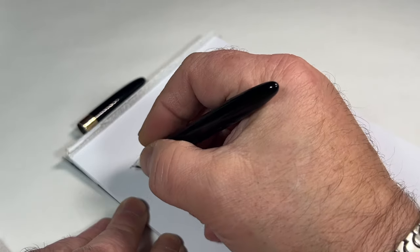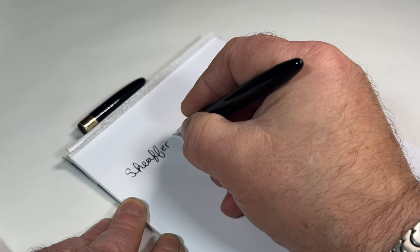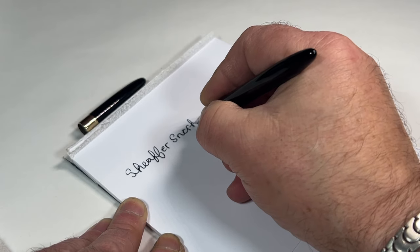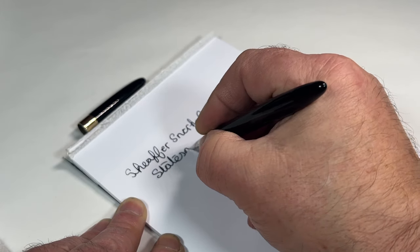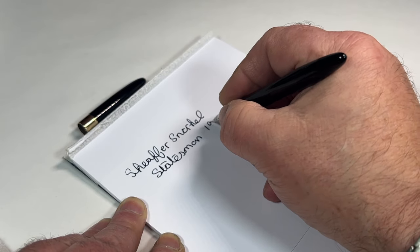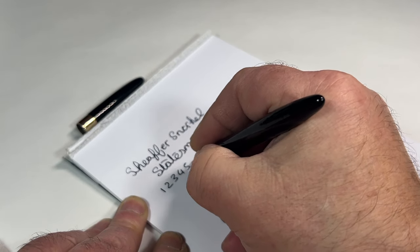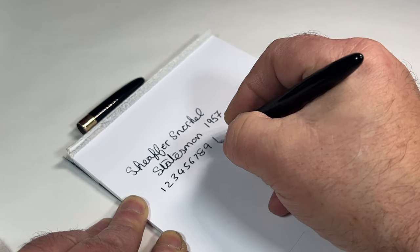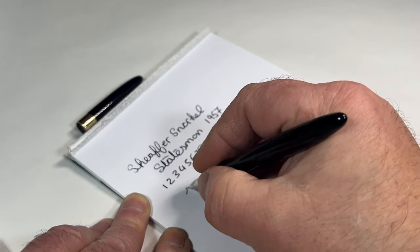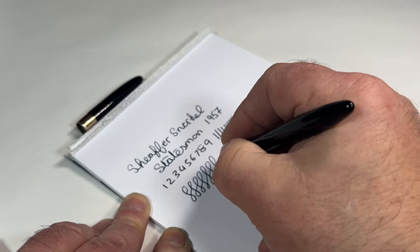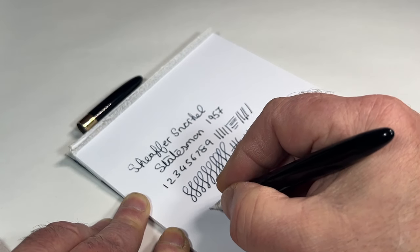Let's see if it works. Let's see how it writes. So what we've got is a Sheaffer snorkel. This one's the Statesman. And we're dating this pen 1957. It's actually writing very nicely indeed. These nibs are quite stiff, so I would not expect any flexibility, because they are quite stiff nibs.